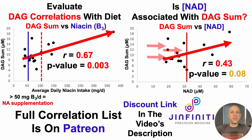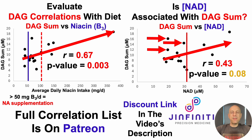For the NAD story, this isn't a perfect correlation — I've had DAG sum values greater than 10 micromolar even at low NAD levels below 30 micromolar. So I'm planning to continue testing for both NAD and metabolomics. Although 17 tests seems like a lot, I need to continue collecting more data to see how this story plays out.